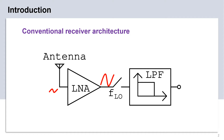Let us look at the conventional receiver chain architecture. The incoming signal from the antenna is first amplified using a low noise amplifier and then processed further. Thus, the stages following the LNA have more stringent constraints for linearity as the signal swing has now increased for them. This problem becomes more severe in an increasingly congested spectrum as is the case today.